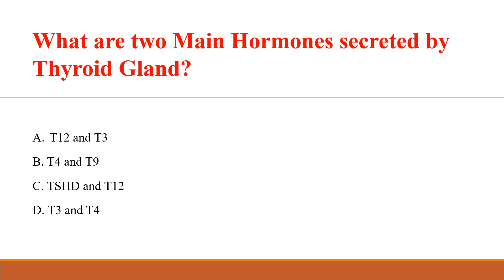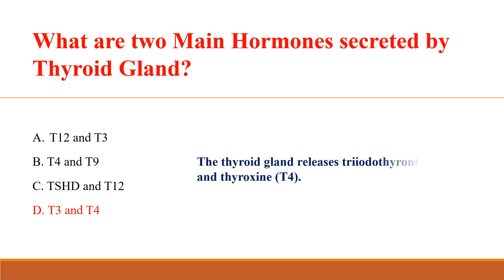What are the two main hormones secreted by the thyroid gland? Answer: B. T3 and T4. The thyroid gland releases T3 and T4.